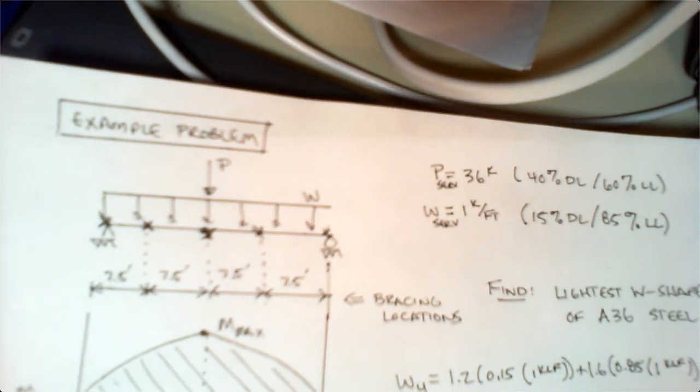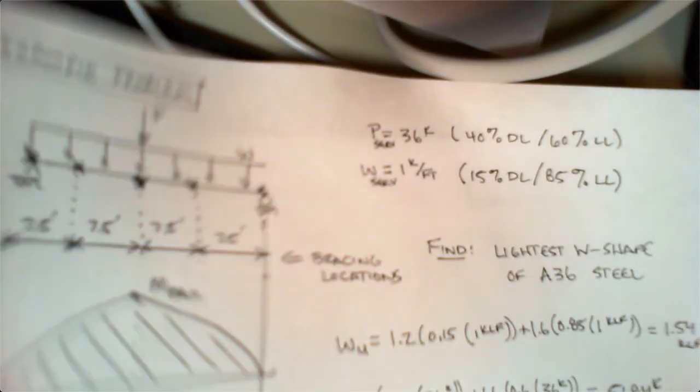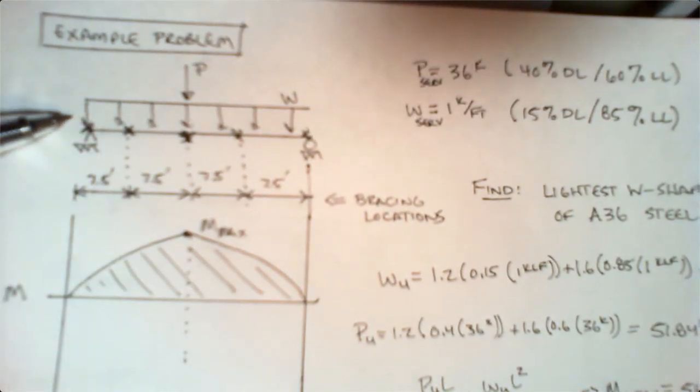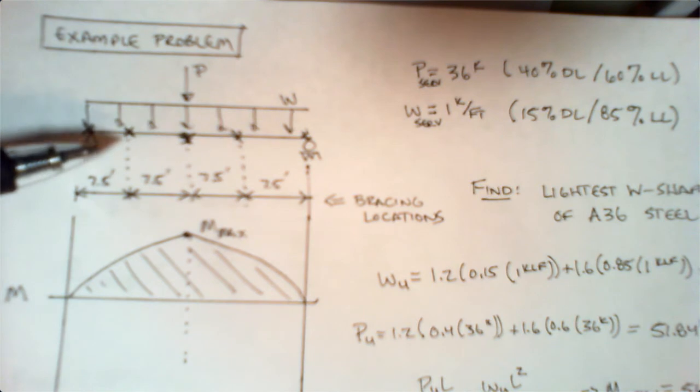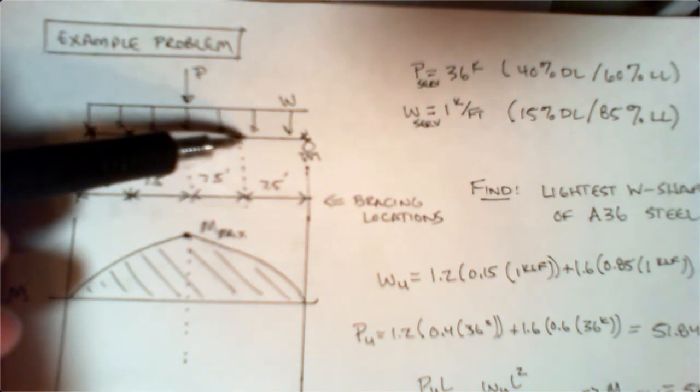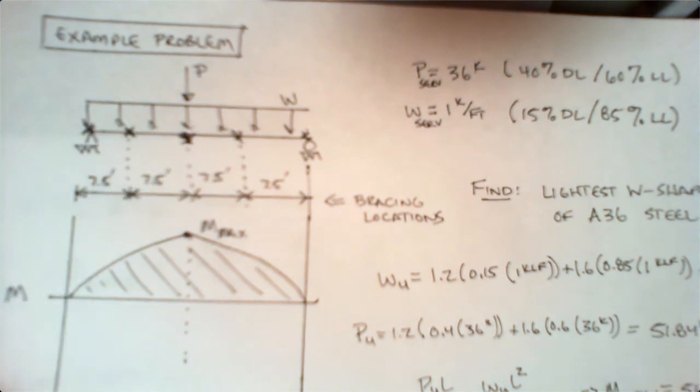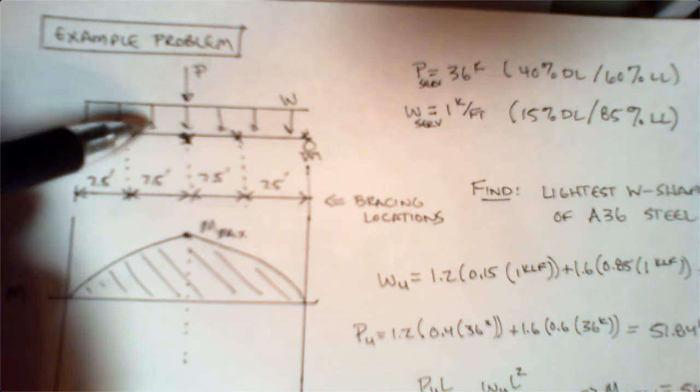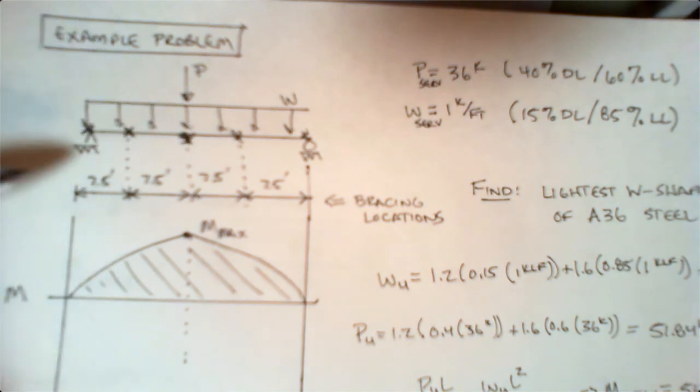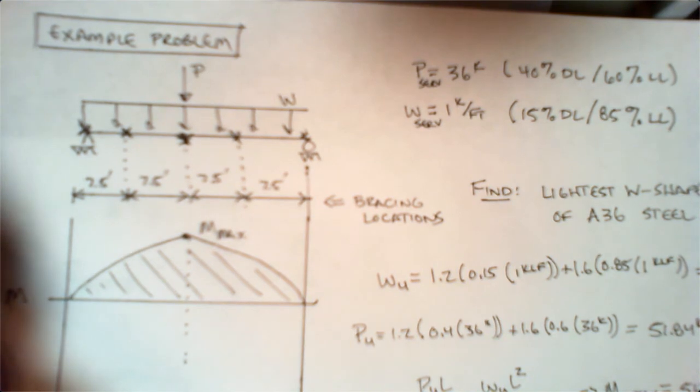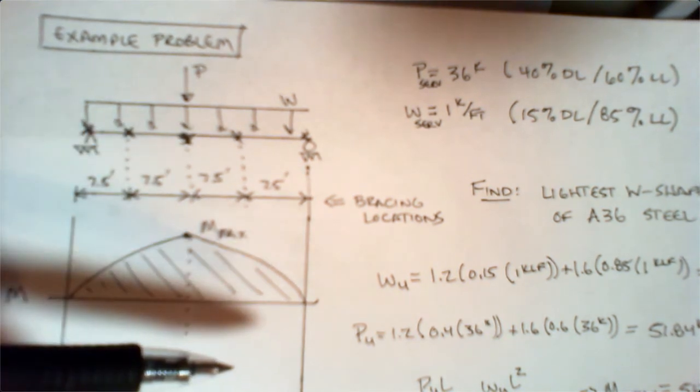If we were to remove one of the braces on this picture—we won't work this all the way through, just talk conceptually—say instead I brace this thing at the ends, in the middle, and at the end, but the one at seven and a half feet and the one out here at 22.5 feet aren't braced. All of a sudden, my unbraced length becomes 15 feet, and it won't fit that criteria.